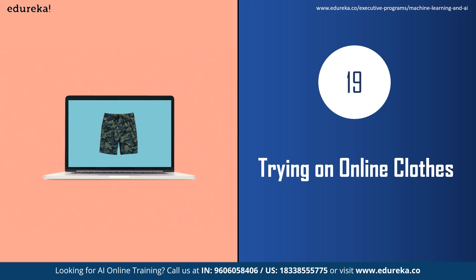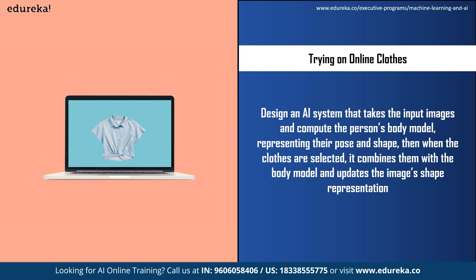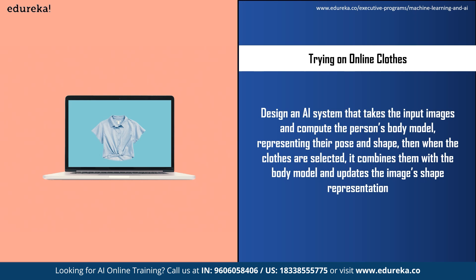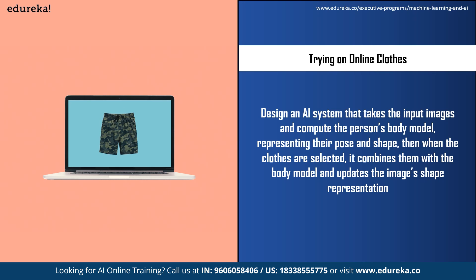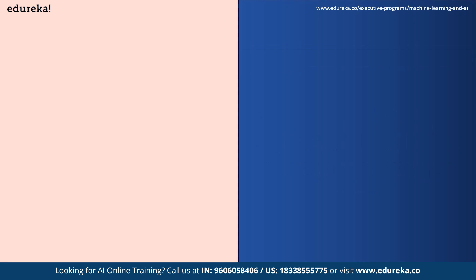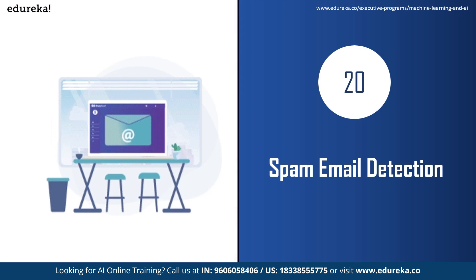The next project idea is trying on online clothes and accessories. You can design an AI system that takes an input image and computes the person's body model — representing their posture and shape. Segments are selected on which the dresses will be displayed, such as a shirt on the body or gloves for hands. When the user chooses a particular dress, the system combines it with the body model and updates the image's shape representation.